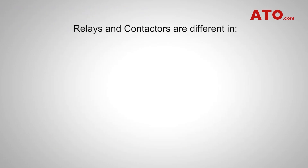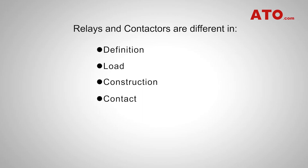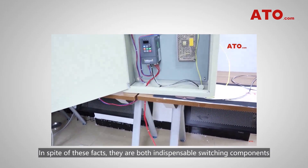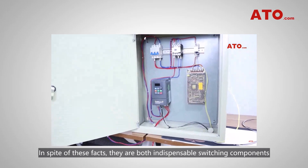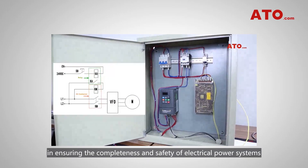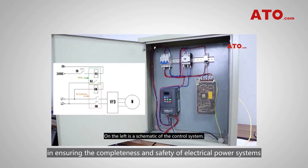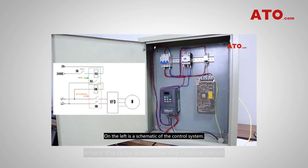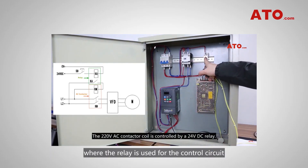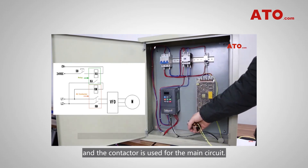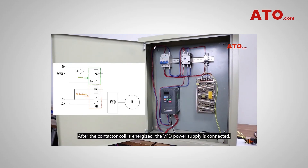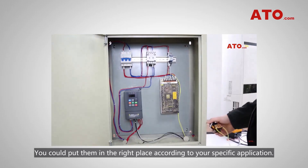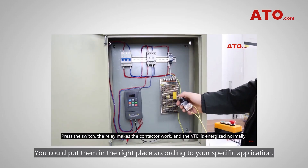In summary, relays and contactors are different in their definitions, loads to be handled, construction, contact arrangement, and applications. In spite of these differences, they are both indispensable switching components in ensuring the completeness and safety of electrical power systems, where the relay is used for the control circuit and the contactor is used for the main circuit. You can put them in the right place according to a specific application.